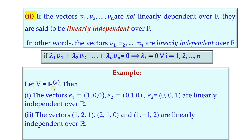In R³, the standard basis vectors E1 = (1,0,0), E2 = (0,1,0), E3 = (0,0,1) are linearly independent over R. When we consider A·E1 + B·E2 + C·E3 = (0,0,0), we easily get A = 0, B = 0, C = 0. Equivalently, forming the determinant with these as row vectors gives a non-zero determinant, confirming linear independence.